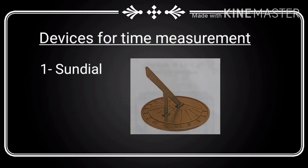Devices for time measurement: In ancient times, time was measured with the help of water clocks and sundials.